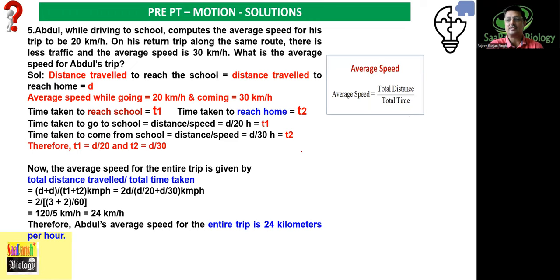Next question is about average speed. This is often asked and students commonly make a mistake here. What do they do? They simply add both speeds and divide by 2. Like here: While driving to school, Abdul computes the average speed for his trip to be 20 km per hour. On return trip along the same route, there is less traffic, so average speed is 30 km per hour. What is the average speed for Abdul's trip? Students often make the mistake: 20 plus 30, which is 50 divided by 2, equals 25 km per hour. And this is absolutely wrong answer. To solve such questions, you need to understand the concept.